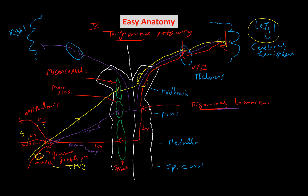At the end of the day, we have the trigeminal thalamic tract, also called the trigeminal lemniscus, which carries sensation from the opposite side of the face. Also keep in mind that the spinal trigeminal nucleus receives input from other nerves besides the trigeminal nerve. The facial nerve also brings sensation from the auricular region to the spinal trigeminal nucleus.